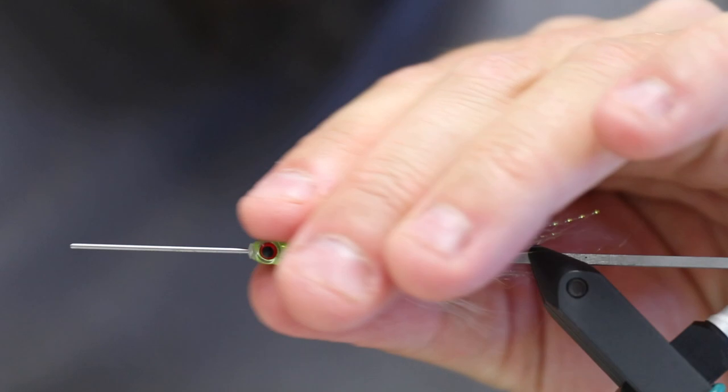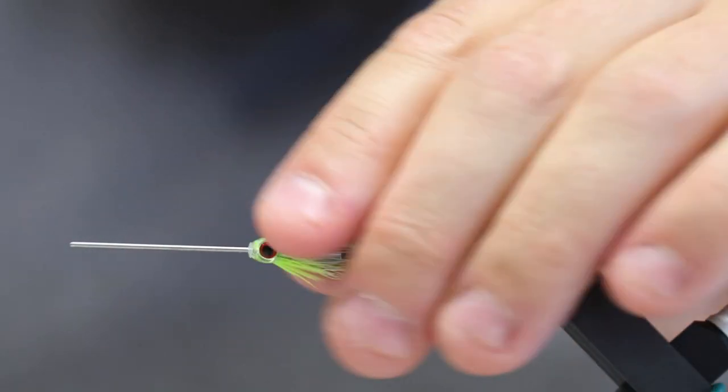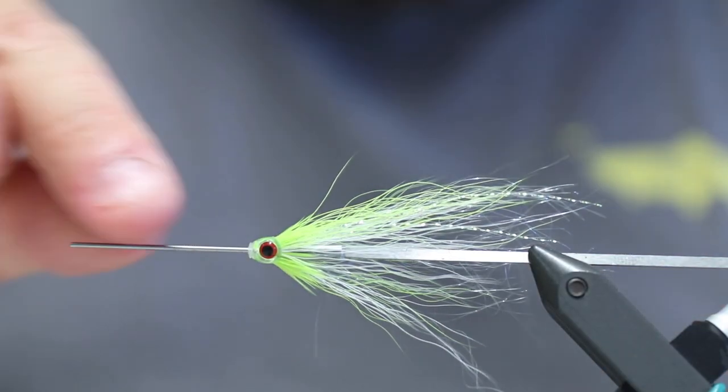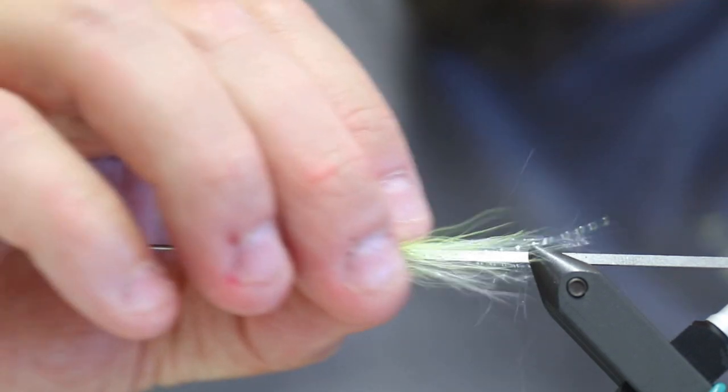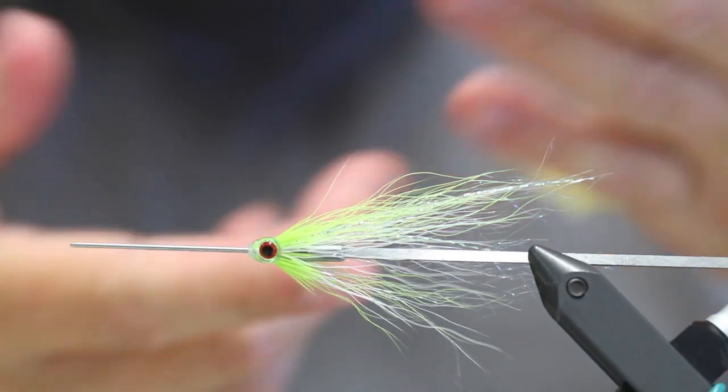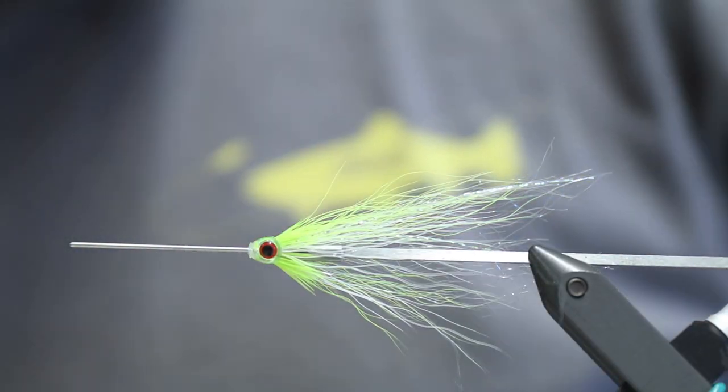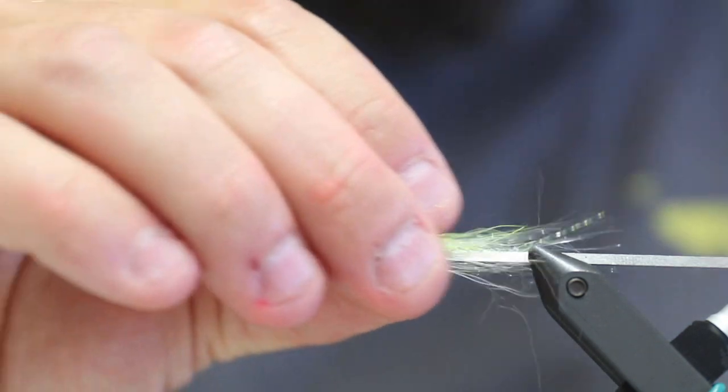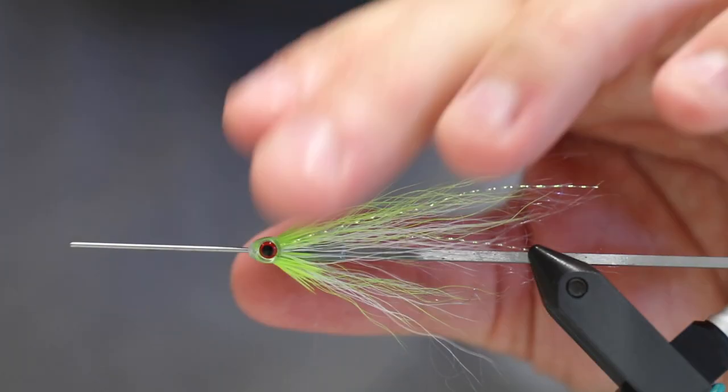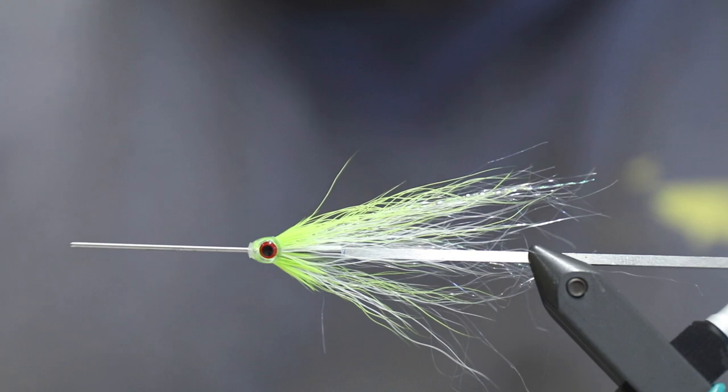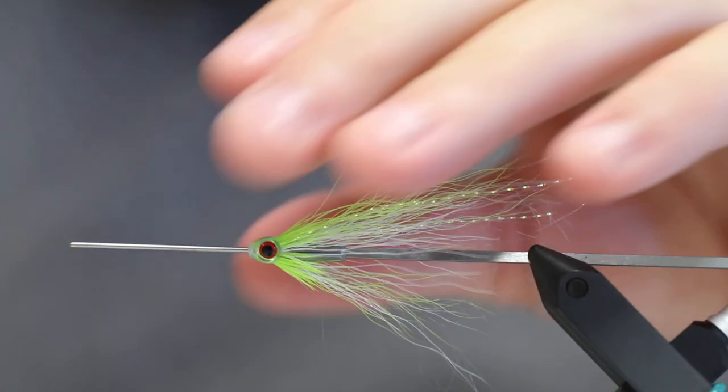Hello there everyone. Today we're going to do this. This is going to be a sand eel on a tube. It's a fairly simple pattern for imitating a small sand eel. Of course you can make this larger or smaller or whatever you want. But this is a neat way of doing a small sand eel imitation that really works well.